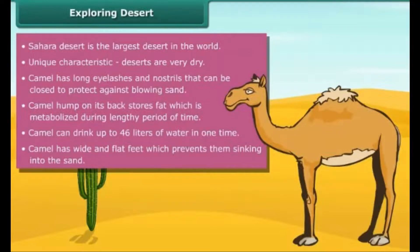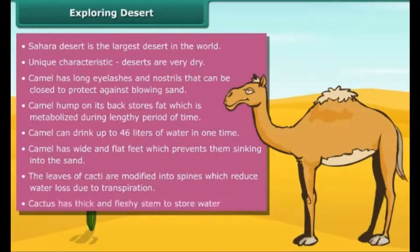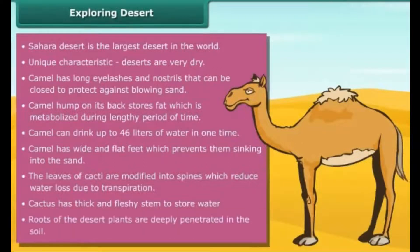Similarly, plants like cacti also show various adaptations to survive in a dry and hot environment. The leaves of cacti are modified into spines, which reduce water loss due to transpiration. Cactus has a thick and fleshy stem to store water. Roots of desert plants deeply penetrate into the soil to absorb water.